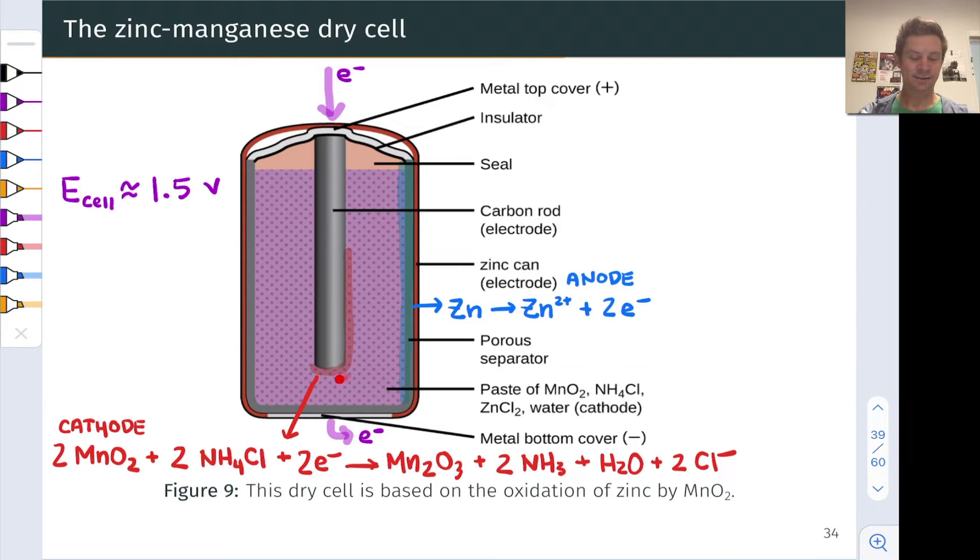So at this carbon rod, which is where electrons really come in, MnO2 undergoes reduction to Mn2O3. I encourage you to pause and verify that this is actually a reduction of manganese from this compound to this compound. And at the anode, which is actually the can that lines the outside of the battery, zinc undergoes oxidation to zinc 2+. And so we see two electrons transferred in this redox reaction.